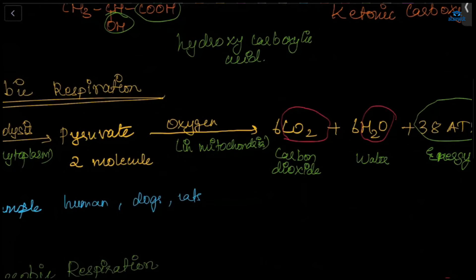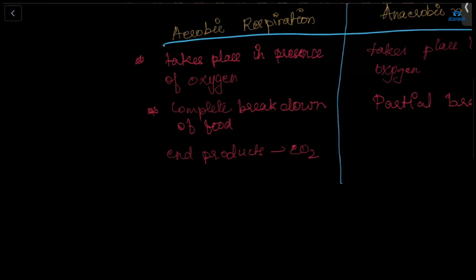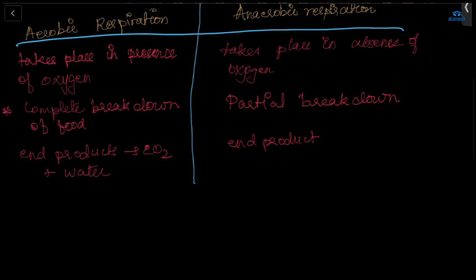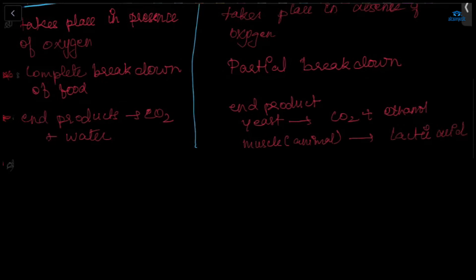In anaerobic respiration in yeast, the end products are ethanol, carbon dioxide, and ATP. In muscle cells the end products are lactic acid and ATP — in both anaerobic cases there is partial breakdown of food, not complete breakdown. These end products are important to remember.